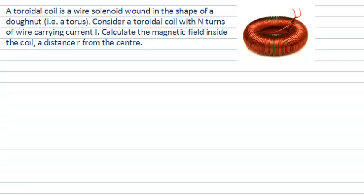This PhysCast is going to use Ampere's law to calculate the magnetic field from a particular arrangement of a current-carrying wire. Pause the video and read through the question carefully.